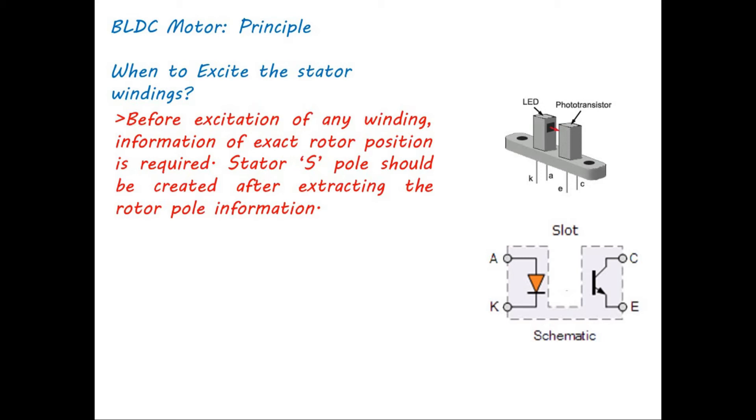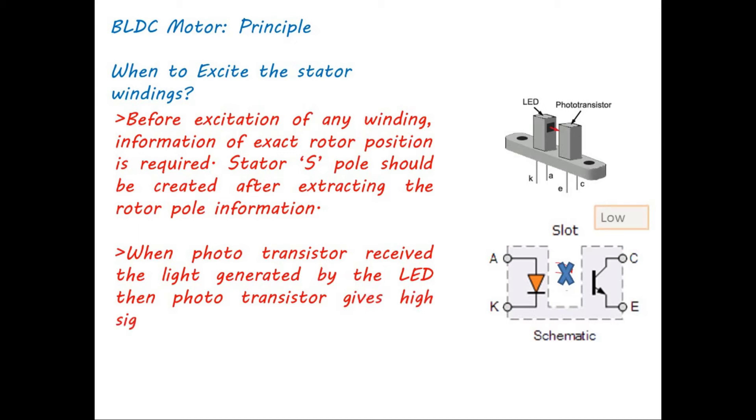When phototransistor receives the light generated by the LED, then phototransistor gives high signal. And when phototransistor is not able to receive the light generated by the LED, phototransistor gives low signal.